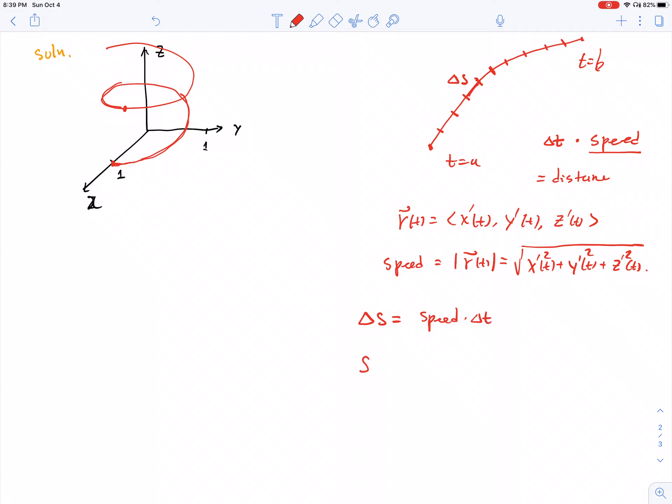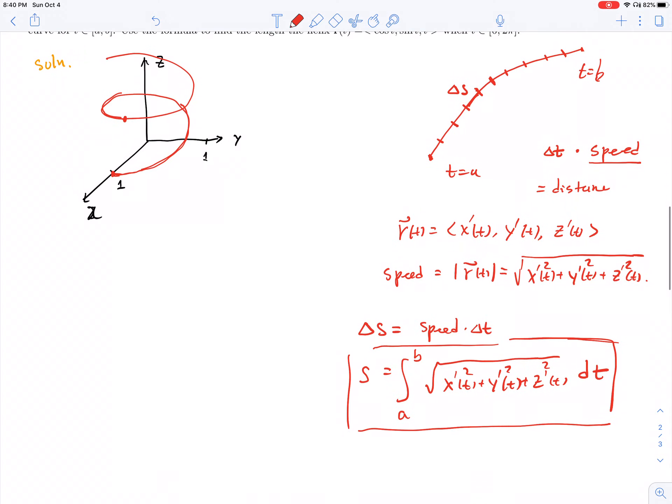The shorter distance, delta S, is equal to your speed at that moment times delta T. The entire arc length is a definite integral from a to b of the square root of x'(t) squared plus y'(t) squared plus z'(t) squared, dt. This is the arc length formula between a and b.